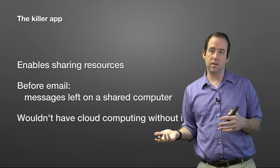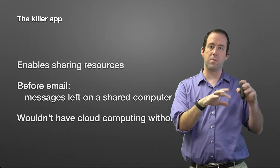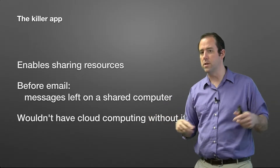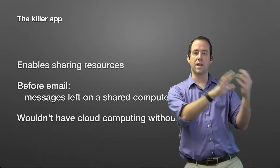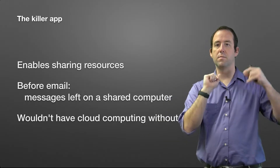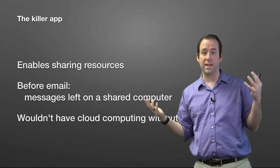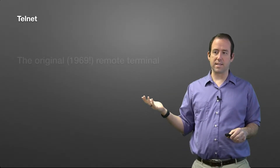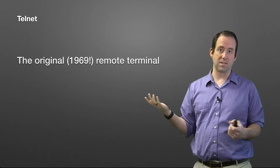Without the ability to access and configure a remote computer, we wouldn't have the internet or cloud computing as we have them today. Amazon isn't going to let thousands of people walk through their data center to hook up a keyboard, mouse, and monitor to set up a server — that's just not practical. So remote access really is the killer app that enabled the internet to exist.